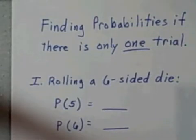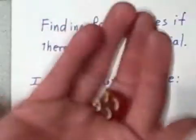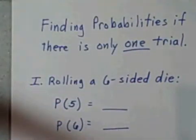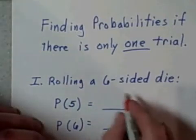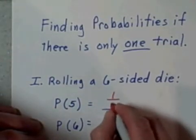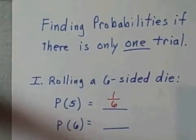For example, if we're rolling a six-sided die, this is pretty straightforward. The probability that I roll a five is, well, we can roll a five one way and there are six possible outcomes, so it's one out of six.